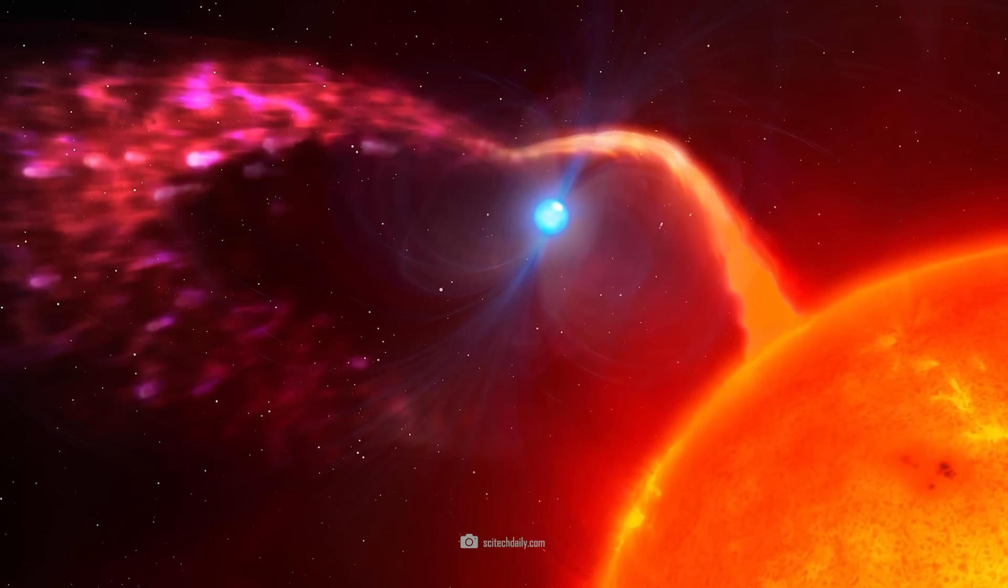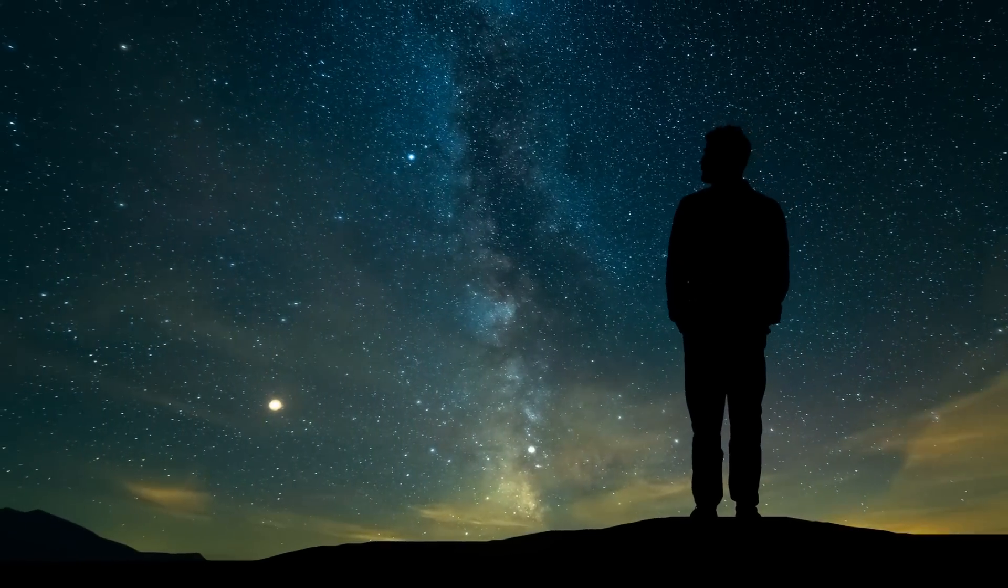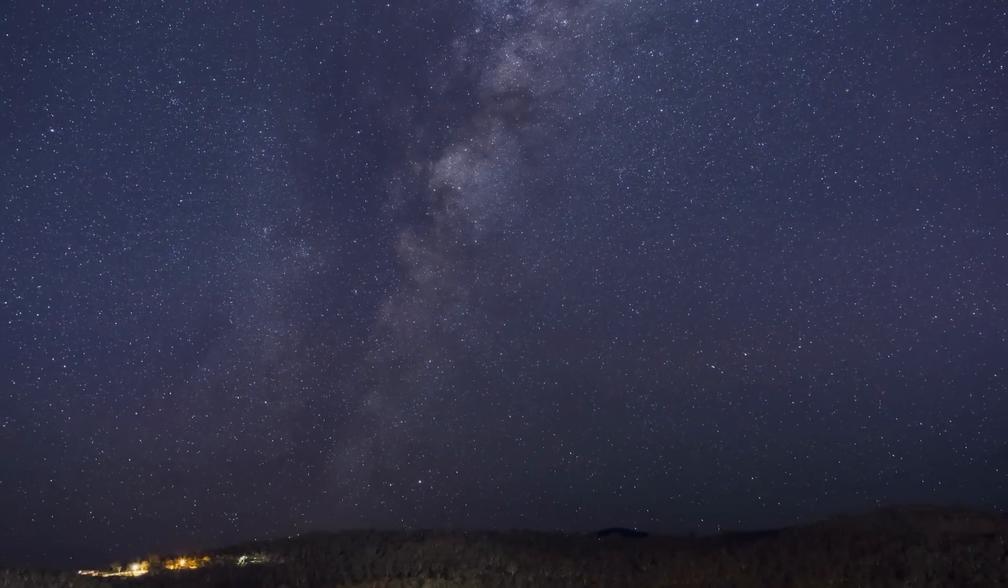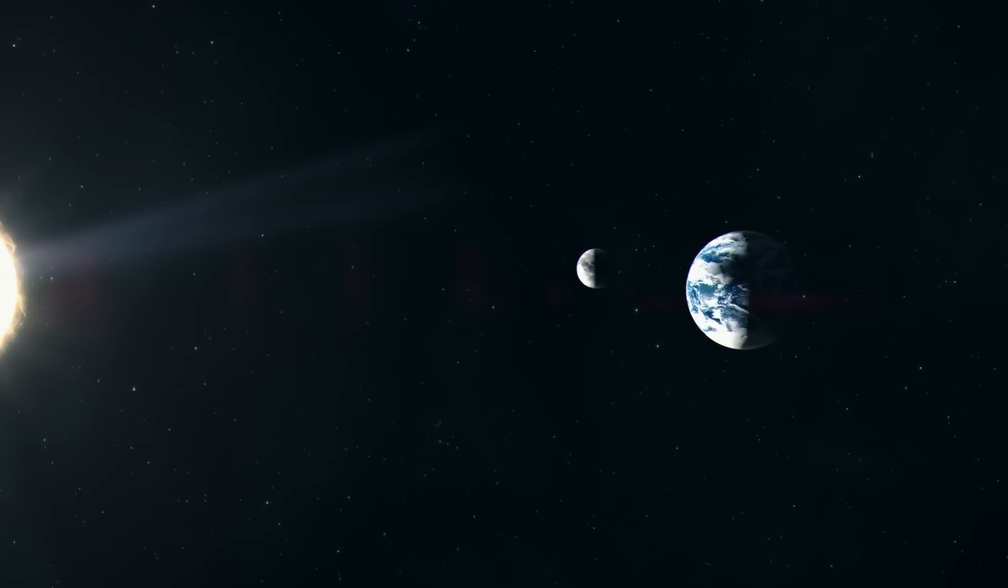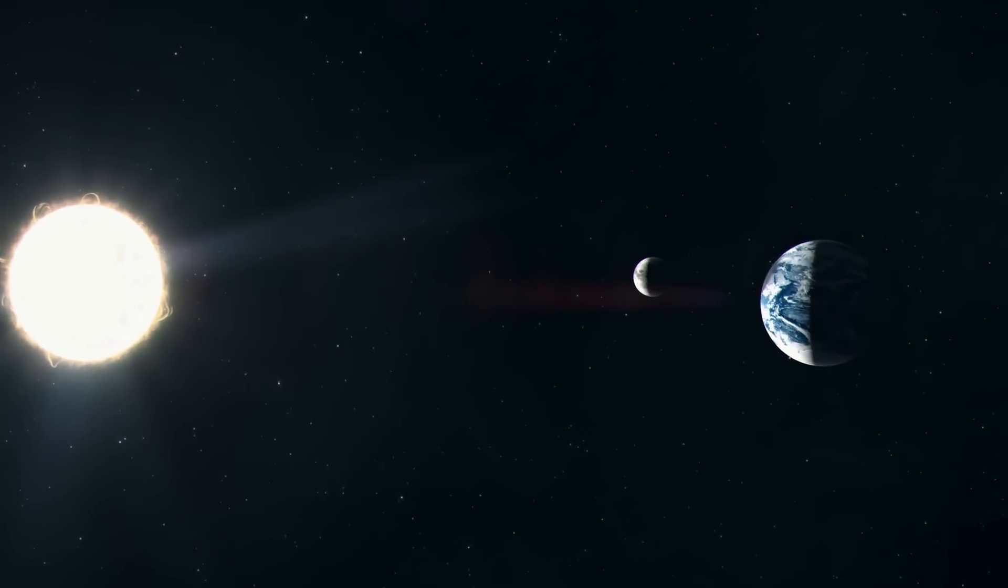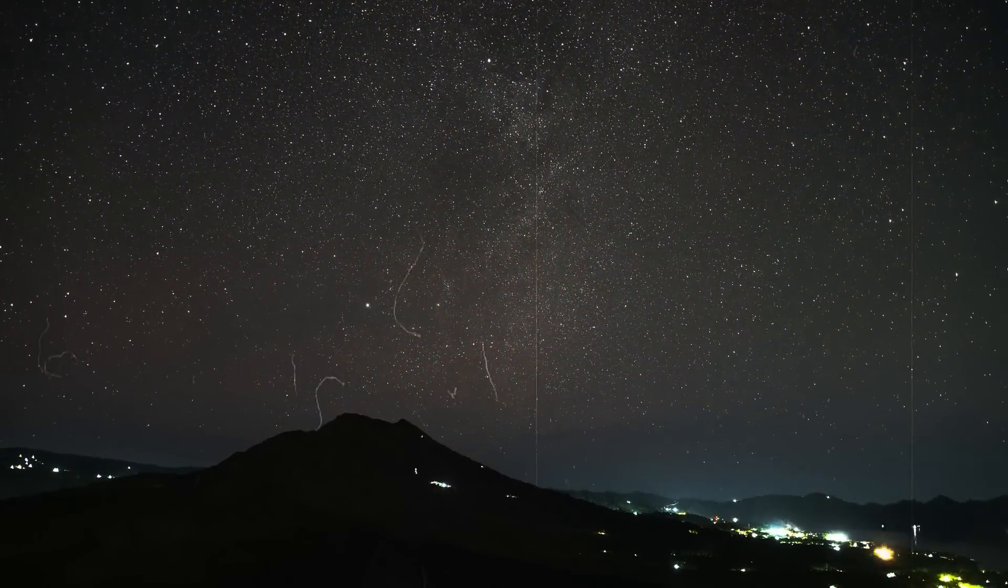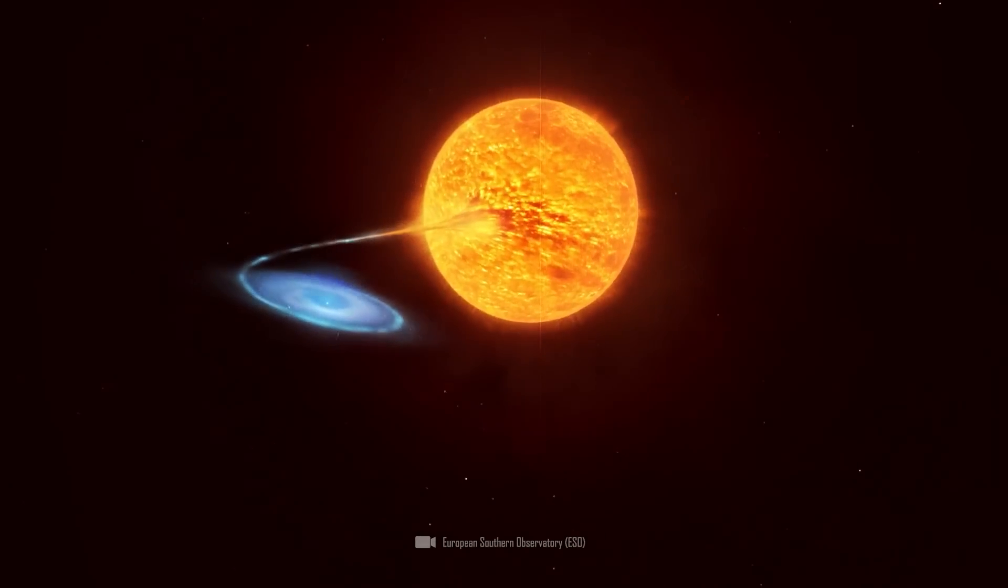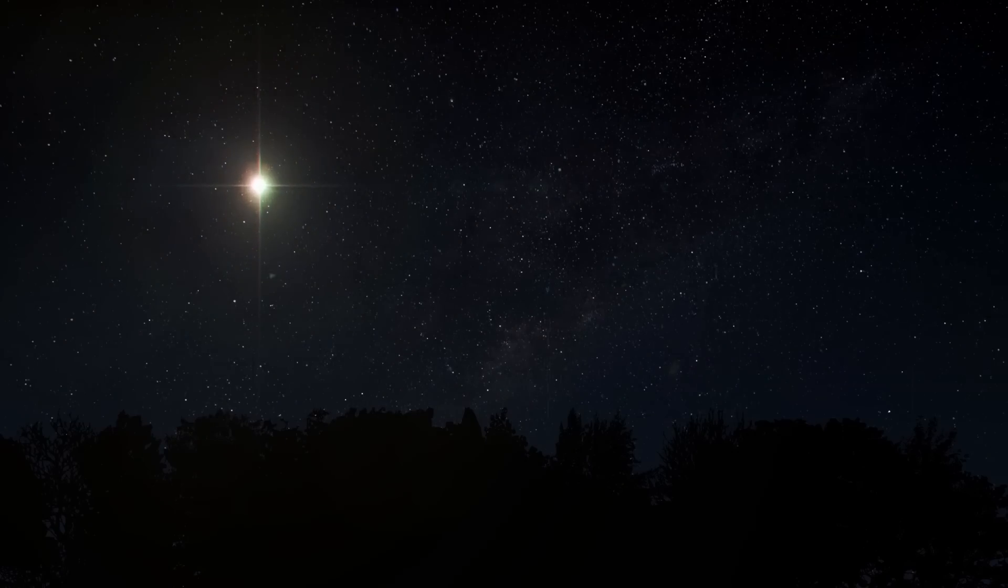That the double star dance in the case of T. CRB is anything but restrained becomes clear when we take a look at the distance between the two celestial bodies. This is estimated to be half an astronomical unit, half the average distance between the Sun and the Earth, or in figures, around 75 million kilometers. It takes 228 days for the objects to orbit each other. And as a result of the spatial constellation, the matter of the red giant flows over to the white dwarf, which brings us to the reason that will give us an awe-inspiring phenomenon in the night sky in the coming weeks.